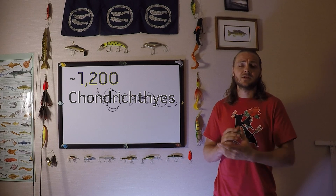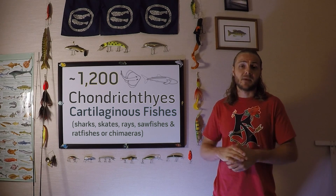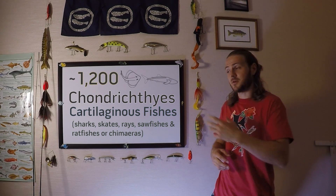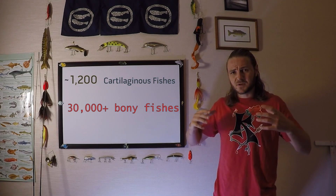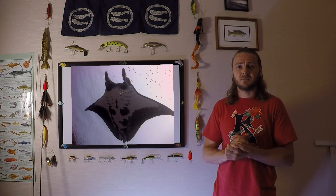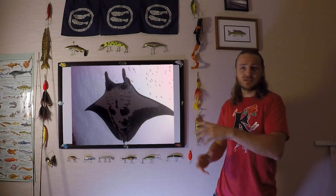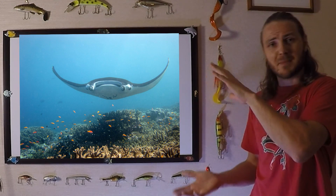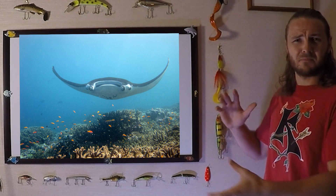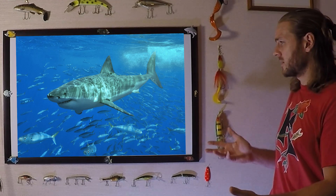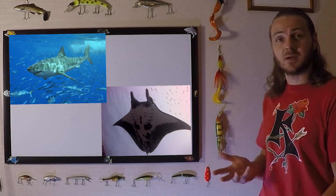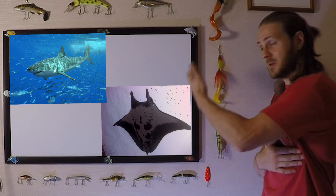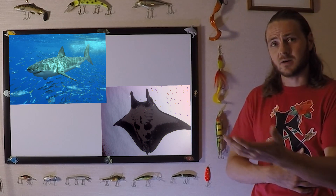There are about 1,200 living species of chondrichthyans, or cartilaginous fishes. That may not seem like much compared to the 30,000 plus in the bony fishes, but the diversity within the chondrichthyes is still amazing. Just look at this dorsoventrally compressed manta ray versus the fusiform muscular body of a great white shark. Obviously there was some great evolutionary divergence going on, even though manta rays evolved from sharks.